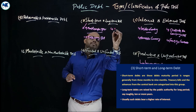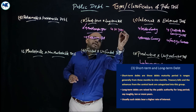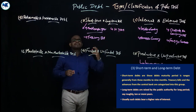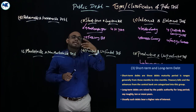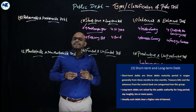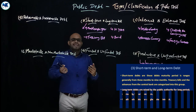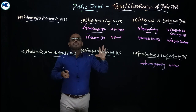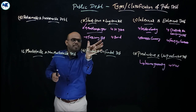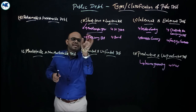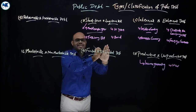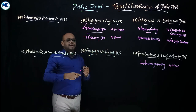Long-term debt has a longer maturity period — for example, 10 years or 5 years, at least more than one year. A best example is bonds issued by the government. Treasury bills are a money market, short-term instrument.